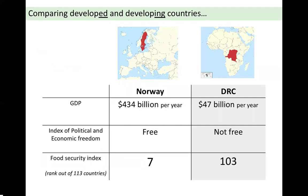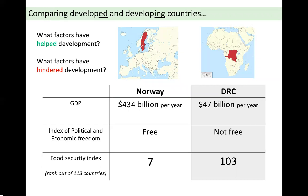The first two countries we're going to compare are Norway and the Democratic Republic of Congo. Remember from earlier in the lesson: Norway's cultural development included paternity leave allowing men to take leave when they have a baby so women can also work; the DRC had the Oxfam water pipeline project to help people in rural areas access safe water. Think about which factors have helped Norway develop but hindered the DRC from developing.